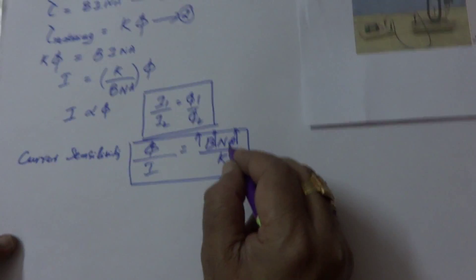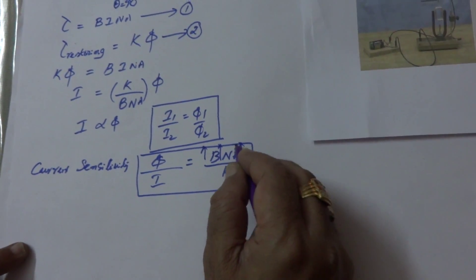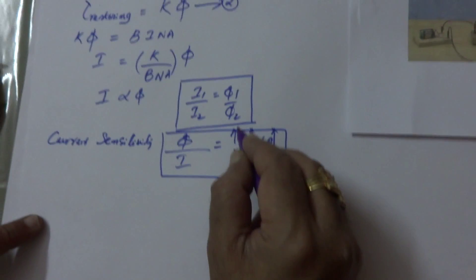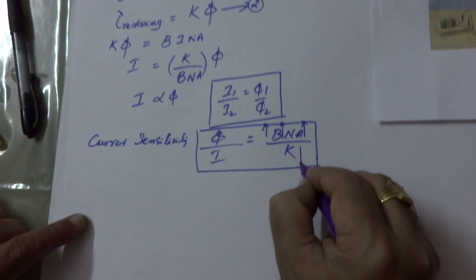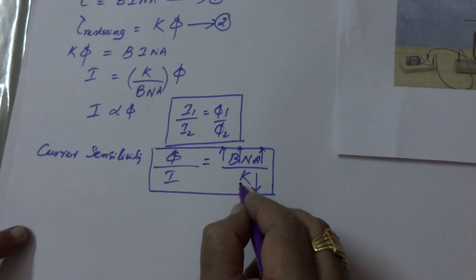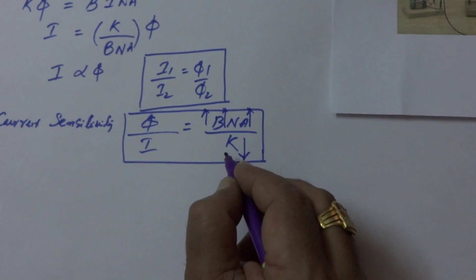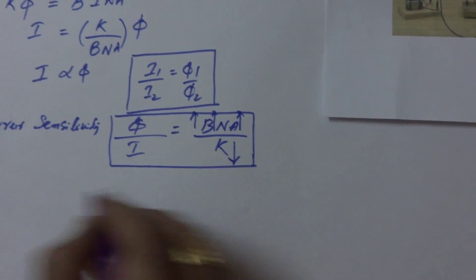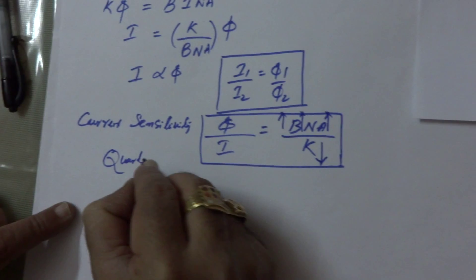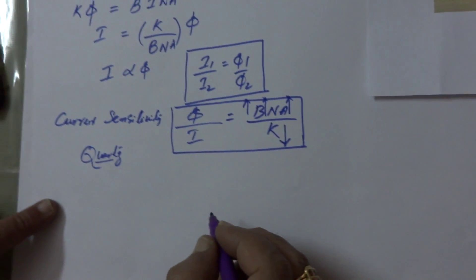If you increase the area, the instrument becomes larger, so there is again a limitation for A. So either you have to increase B, or you have to reduce K. To reduce K, the phosphor bronze wire can be replaced by a quartz wire. In that way you can increase the current sensitivity.